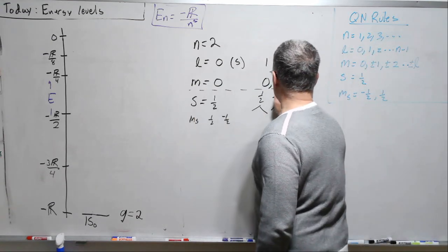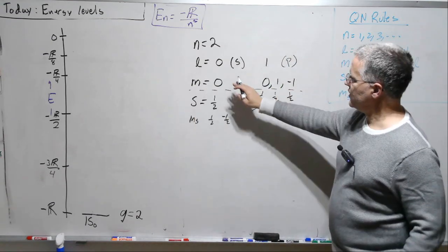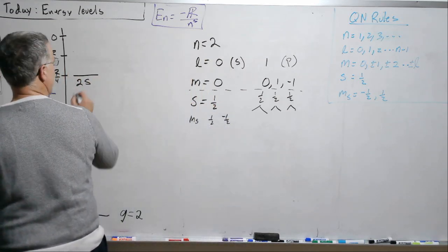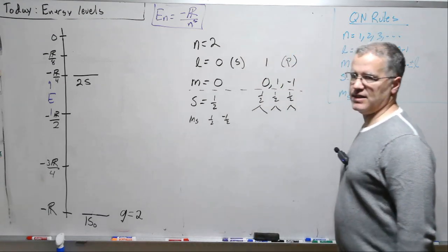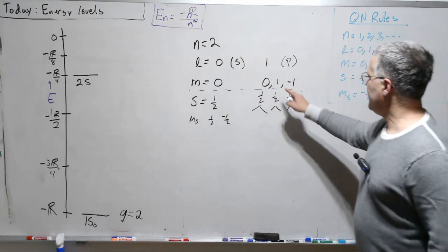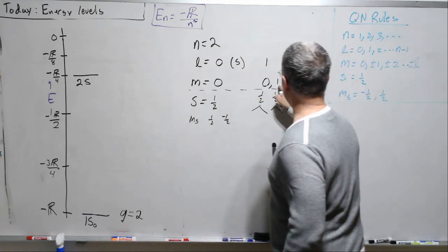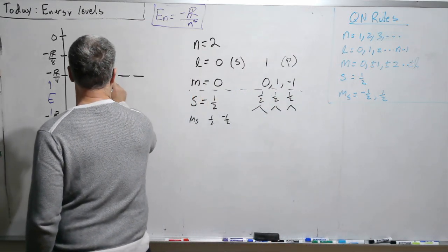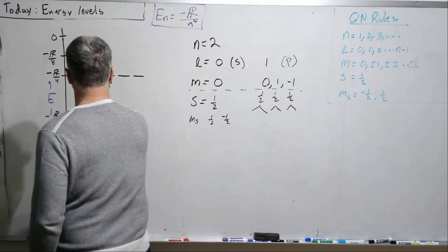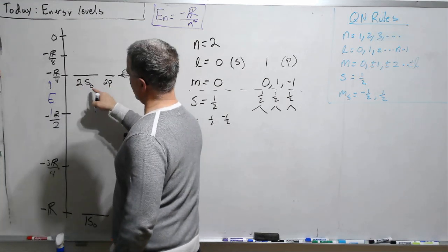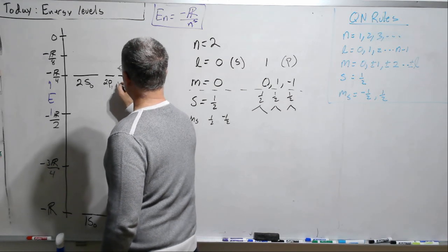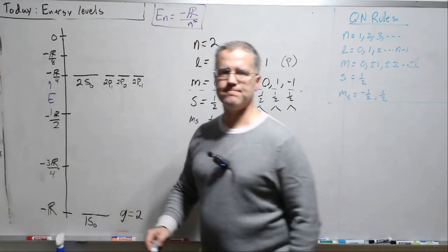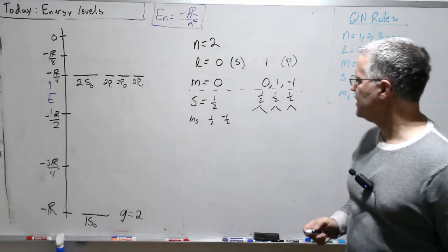Let's just limit ourselves to the spatial states. There's one S state, so that's called the 2S, because n is 2, L is S. And then there are 1, 2, 3. So this is a 2S0. We usually don't write the zero. A 2P1, 2P0, 2P minus 1. So there are three 2P states.